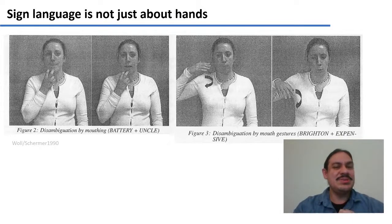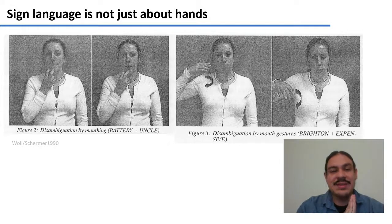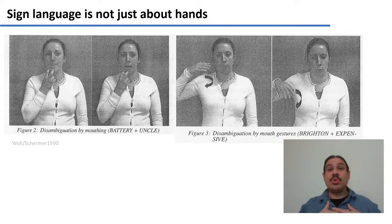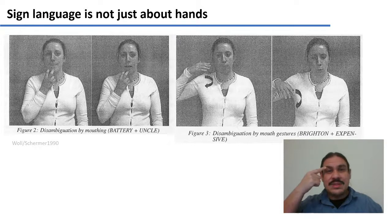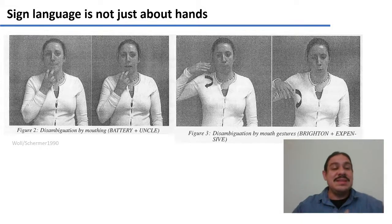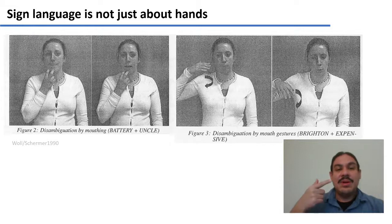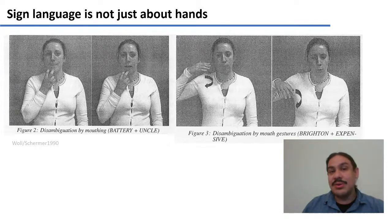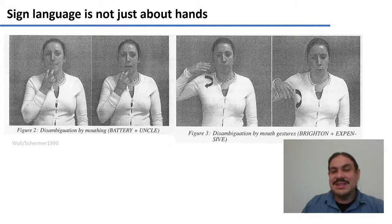The main idea I want to convey is that sign language is not just about hands. Sure, many signs are made with your hands, but there are a lot of other articulators involved. For instance, the position of your torso can change the tense of a word. Your eyebrows in ASL can indicate whether you're asking a yes-or-no question or a who/what question. In British Sign Language, a closed mouth versus an open mouth can indicate the difference between 'battery' and 'uncle,' which are otherwise the same motions. Similarly, flat lips versus pursed lips are the only difference between the signs for 'brightened' and 'expensive.'